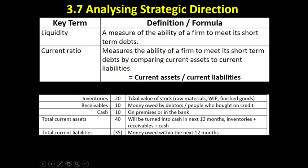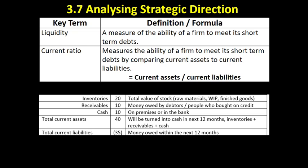The definition of the current ratio is the ability of a firm to meet its short-term debts by comparing current assets to current liabilities. To calculate it, we simply divide current assets by current liabilities. It's really important that you know this formula and know how to interpret it. Here's an extract from a balance sheet — figures are in millions — and if you know your balance sheet, you'll know that inventories, receivables, and cash are our current assets.